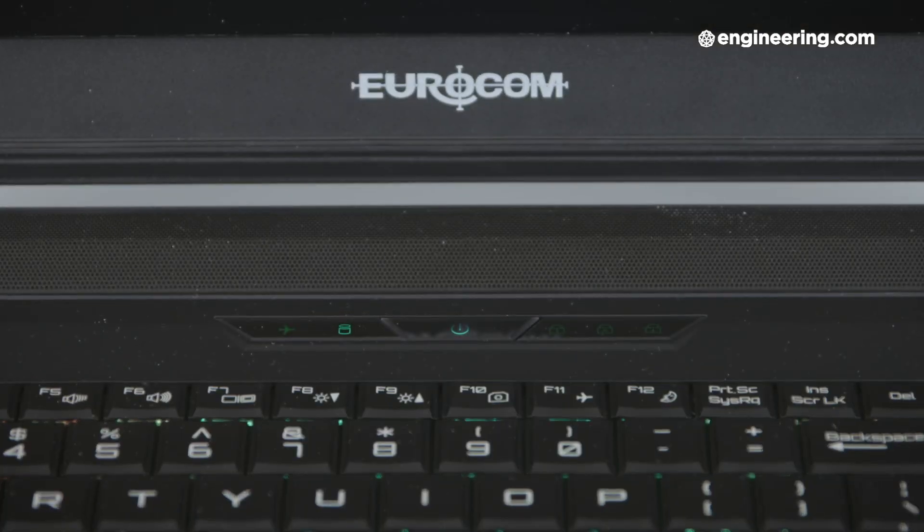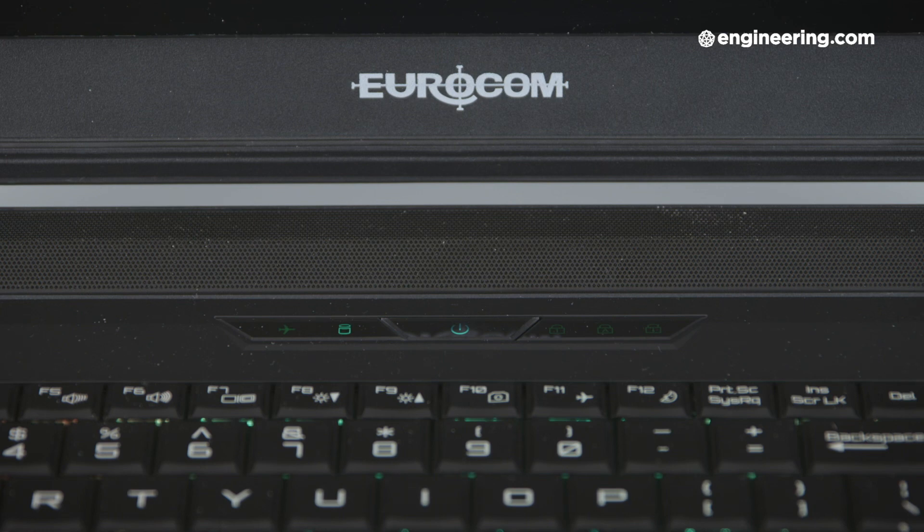Just above the keyboard is a little panel with lights to indicate things like power, whether any of the lock keys are on, whether airplane mode is on, and whether the disk is in use. I found this more annoying than helpful because it was constantly blinking at me, but I suppose it could come in handy.